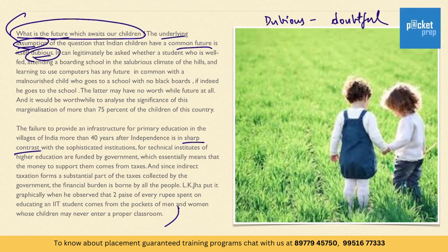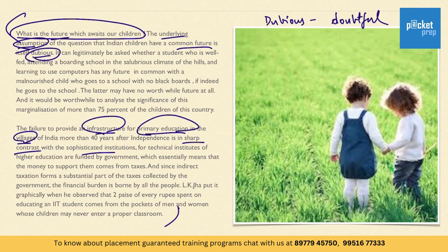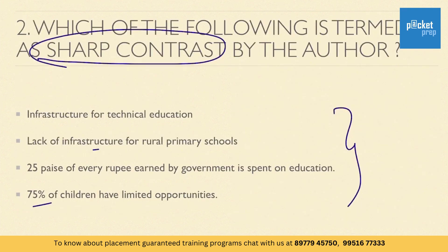The sentence reads: 'the failure to provide an infrastructure for primary education in the villages of India more than 40 years after independence is in sharp contrast with the sophisticated institutions.' So even after 40 years after independence, the infrastructure of primary education in villages is in sharp contrast with sophisticated institutions. The answer among the given alternatives is: lack of infrastructure for rural primary schools.